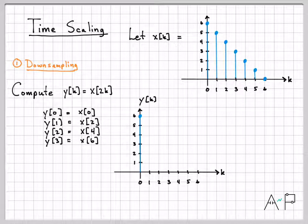If I plot y of k, here's what I get. At time 0, it was equal to x of 0, which was equal to 6. At time 1, I get the signal x of time 2, which was equal to 2. At time 2, I'm equal to my signal x at time 4, which was this value right here, and so on. So it's like we're skipping all of these odd values of my original signal. So that's what the downsampled signal looks like.